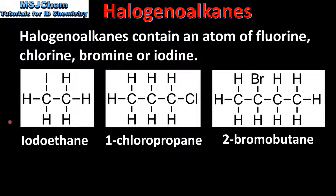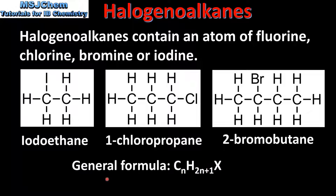Here we have some examples of halogenoalkanes. From left to right we have iodoethane, 1-chloropropane and 2-bromobutane. The general formula of the halogenoalkanes is CnH2n+1X, where X is a halogen atom.